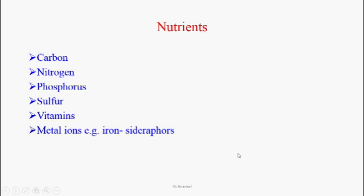The major nutrients required for bacteria are carbon, nitrogen, phosphorus, sulfur, vitamins, minerals, and metal ions — especially iron. Some bacteria carry structures called siderophores, which attract iron molecules from host cells. Important examples are Mycobacterium tuberculosis and Escherichia coli, which carry siderophores to take iron from the host, aiding their replication and growth even in low-iron environments.